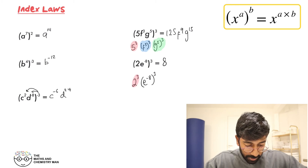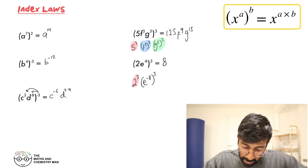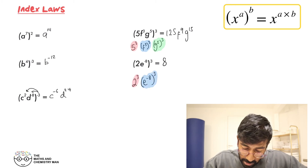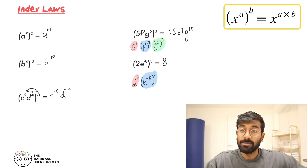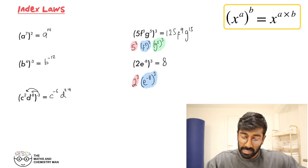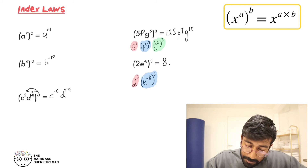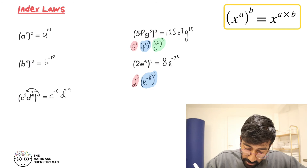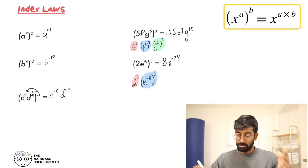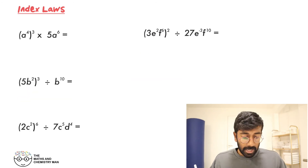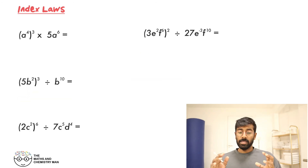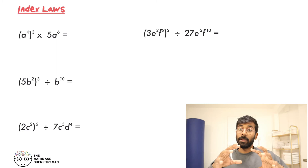Then E to the minus 8 all cubed — times those together: minus 8 times 3 — E to the power of minus 24. Great, perfect.